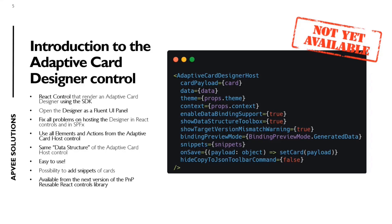The cool feature is you only need to use one React control. It has some properties that are the same as the previous control: you need to pass the card payload, the data, the Fluent UI theme, the context of the web part, and some properties like Enable Data Binding Support and Show Data Structure Toolbox. Think of this control as simplifying the use of the designer inside a SharePoint Framework web part. Later I'll show you a demo.